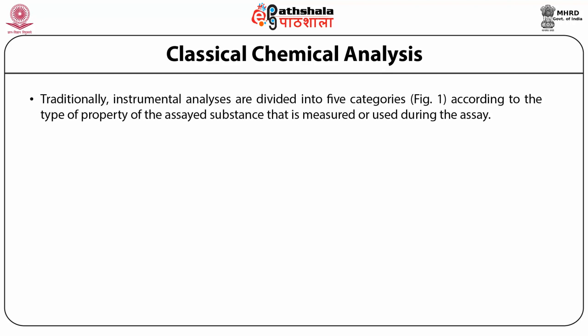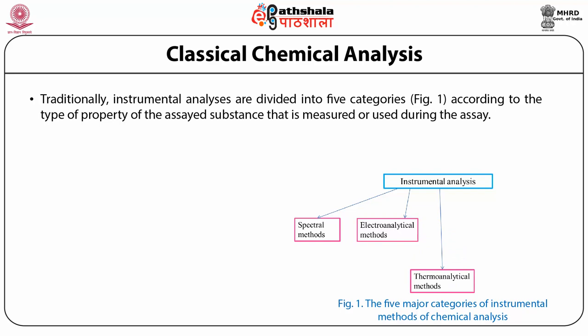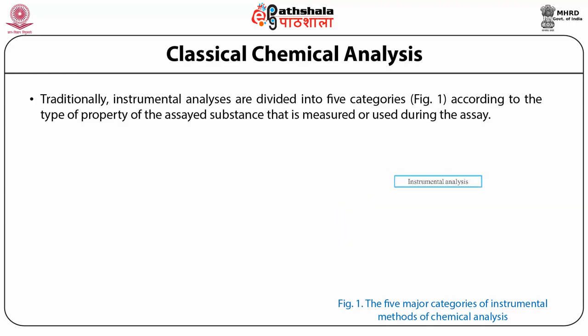Traditionally, instrumental analysis is divided into five categories as shown in Figure 1. Instrumental analyses are of four types plus one category of separation methods. Instrumental analyses are based upon the property of the substance that is measured or used during the assay.